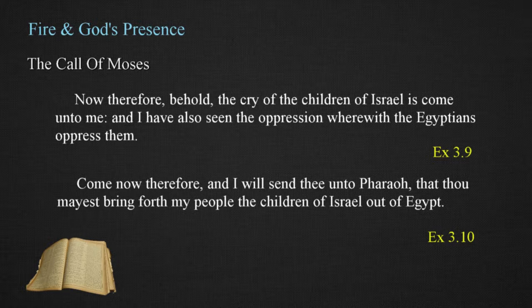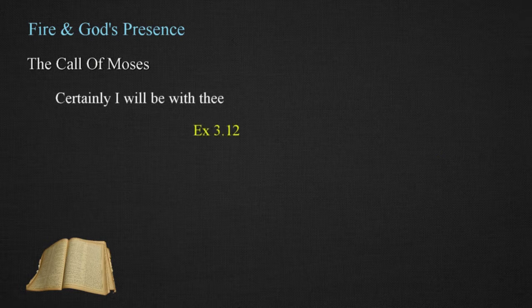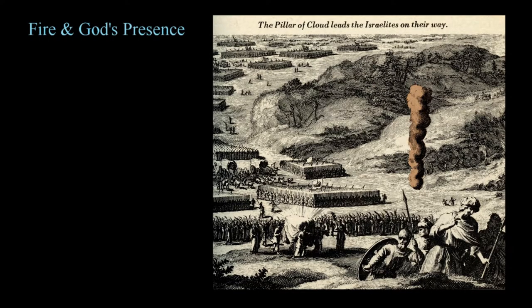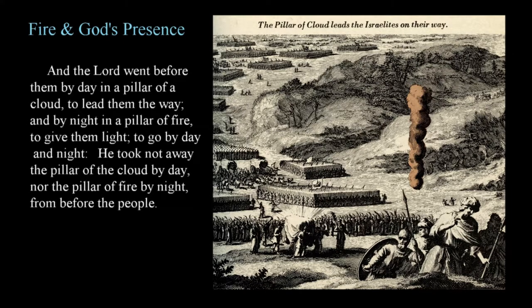God's appearance in the burning bush is intended to impress upon Moses that his power is sufficient to accomplish his will, and he encourages him to be bold in the task ahead. God states, 'Certainly I will be with thee,' in Exodus 3:12. The absolute nature of God's power is declared as he pronounces that deliverance will be accomplished, stating, 'When thou hast brought forth the people out of Egypt, ye shall serve God upon this mountain,' in Exodus 3:12. As the Hebrews left Egypt, God gave the people a visible reminder that he was with them, which included fire. The Lord went before them by day in a pillar of a cloud to lead them the way, and by night in a pillar of fire to give them light, to go by day and night.